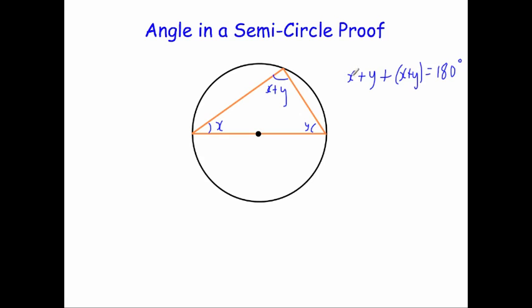Let's simplify that. X plus X is 2X, and Y plus Y is 2Y, and that equals 180 degrees. We were asked to find the size of this angle at the top, which is X plus Y. So I'm going to half my equation. That's going to give me X plus Y equals 90 degrees.